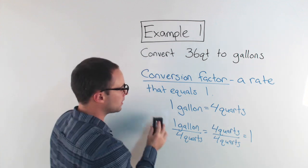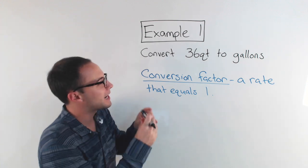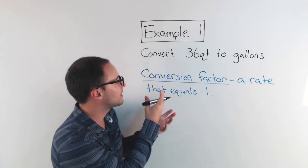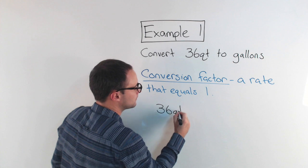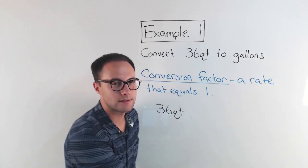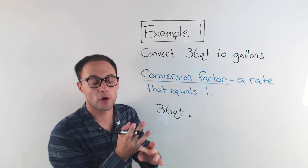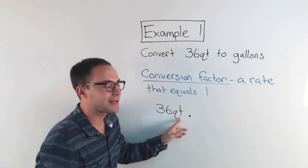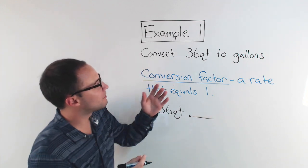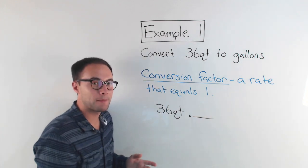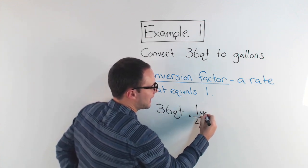So with that information, one gallon is equal to four quarts. Now I can convert. So what I'm going to do is I am going to set up a problem, and I'm going to write this as a fraction using that conversion factor. I'm starting with my amount, 36 quarts. I want to get to gallons. So I know my conversion factor is four quarts is equal to one gallon.